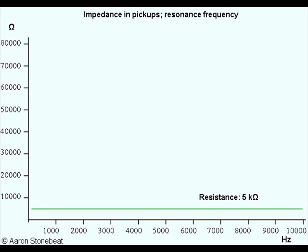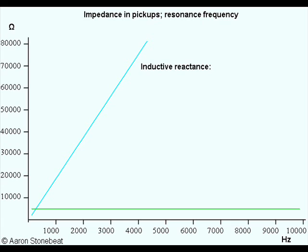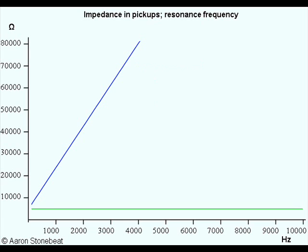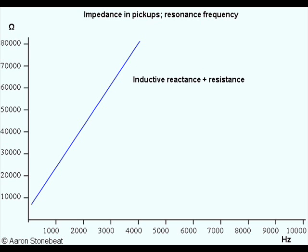Graphically, it looks like this. For those who like to calculate, if you know the inductance of a coil, it's easy to know the reactance — it's 2π times the inductance times the frequency. In this example, I take the inductance to be 3H. Finally, we have to add the two functions together, and then the graph looks like this. Now we have inductive reactance plus resistance, and this is what's called impedance: 2π times the inductance times the frequency, plus the resistance of the wire.